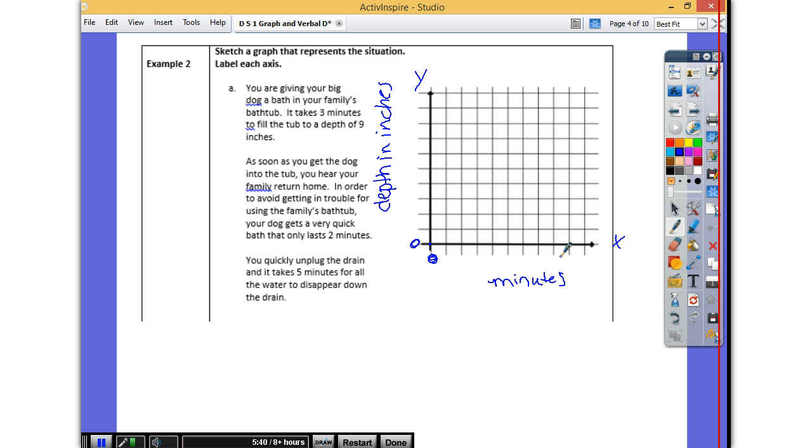What intervals do you want to go for minutes? One by ones, twos, fours, what? Because we only go five minutes, two minutes, three minutes, let's just go by ones. Label those. How about depth in inches for the water? Ones again. I agree. So when we first started, here we are at the bottom of the bathtub, right? No water in it. We're at zero, zero. We haven't started anything.